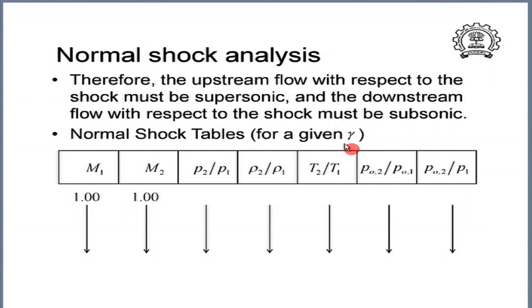For a given gamma — say 1.4 — the normal shock table typically includes columns for M1 (starting from 1, since M1 ≥ 1 is required for a physically meaningful normal shock), M2, P2/P1, rho2/rho1, T2/T1, and a few other ratios to be discussed further. Corresponding to M1 = 1, M2 is also exactly equal to 1. With this, the lecture concludes for today.